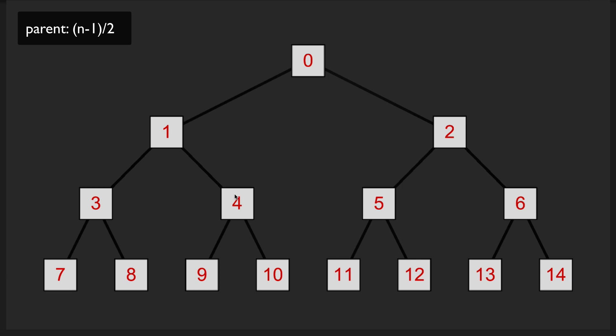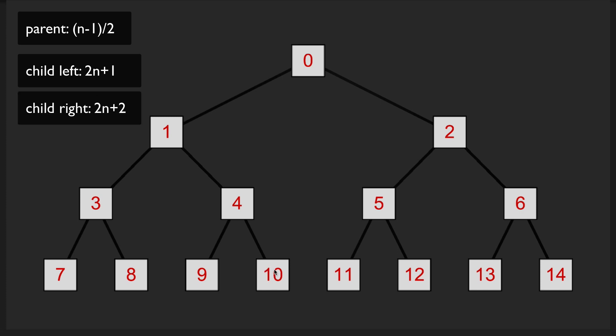To find the children of node 4, we multiply by 2 to get 8, then add 1 for the left child and add 2 for the right child. So the formula for getting the two children of any node in the heap is n * 2 + 1 and n * 2 + 2. Now that we have this insight into how a heap works, let us program one.